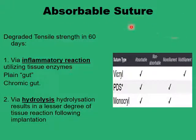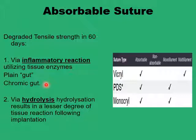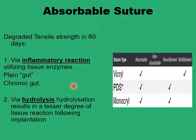Absorbable sutures can be synthetic or natural. The natural absorbable sutures, which were developed earlier, like the plain gut or chromic gut sutures, are degraded through an inflammatory process and ultimately cleared off the tissues by tissue enzymes and the like. While the synthetic absorbable sutures that came later, like Vicryl, PDS, and Monocryl, are degraded and eliminated through hydrolysis rather than an inflammatory reaction.